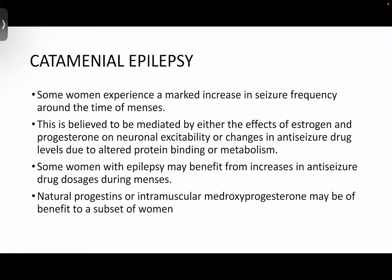Catamenial epilepsy involves increasing seizure frequency around the time of menses. It is believed to be mediated by the effects of estrogen and progesterone on neuronal excitability, or changes in antiseizure drug levels due to altered protein binding or metabolism during the menstrual period. Some women with epilepsy may benefit from an increase in antiseizure drug doses during menses. Natural progestins and intramuscular medroxyprogesterone may also be of some benefit in this subset of women.